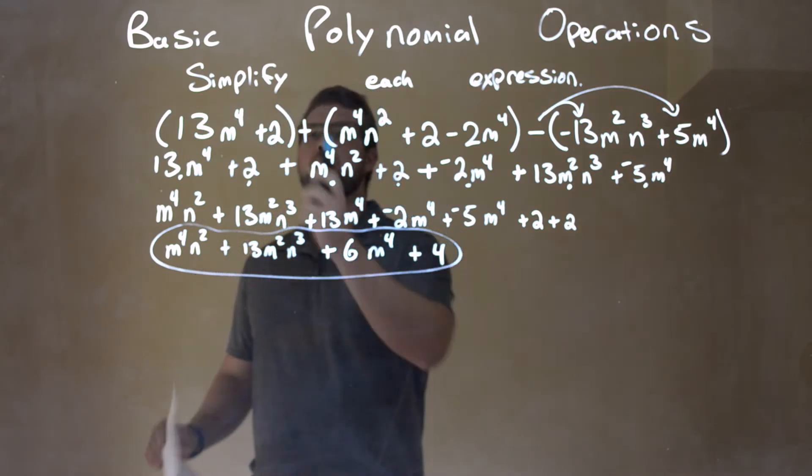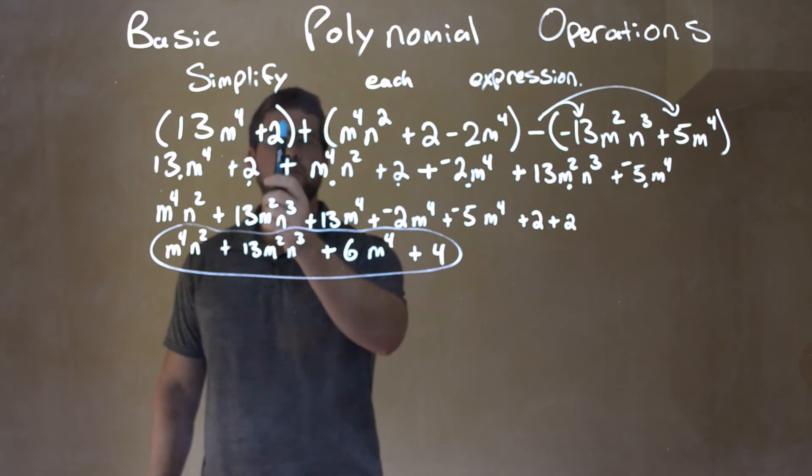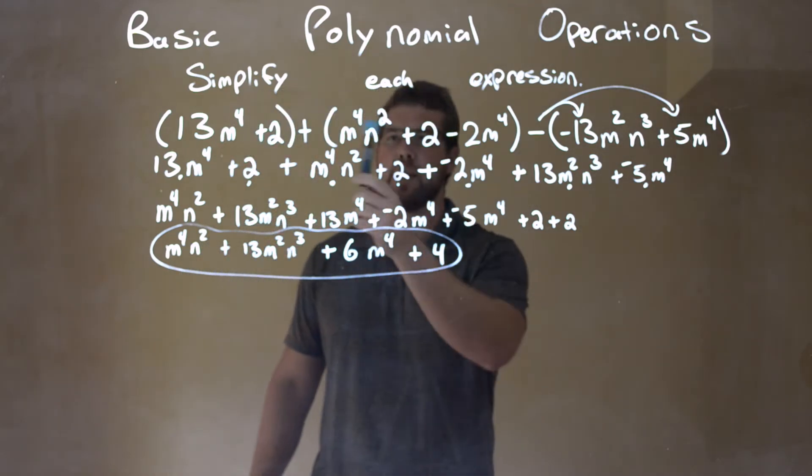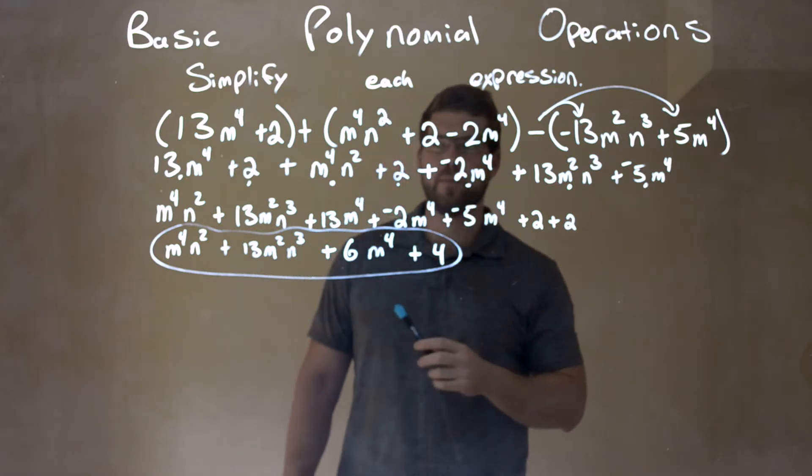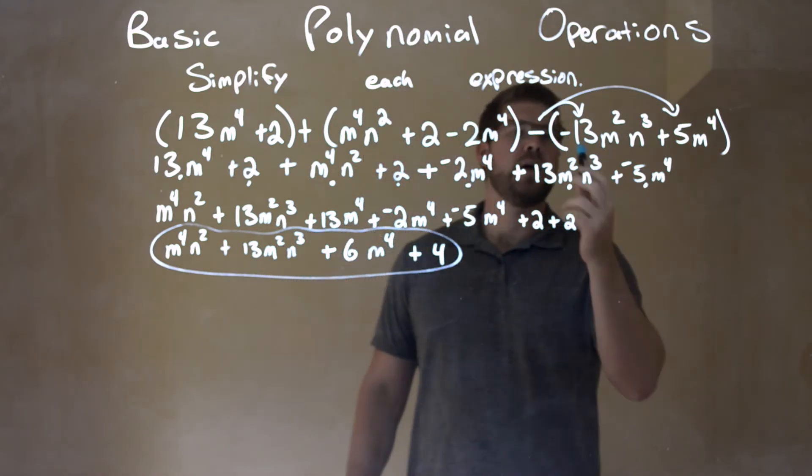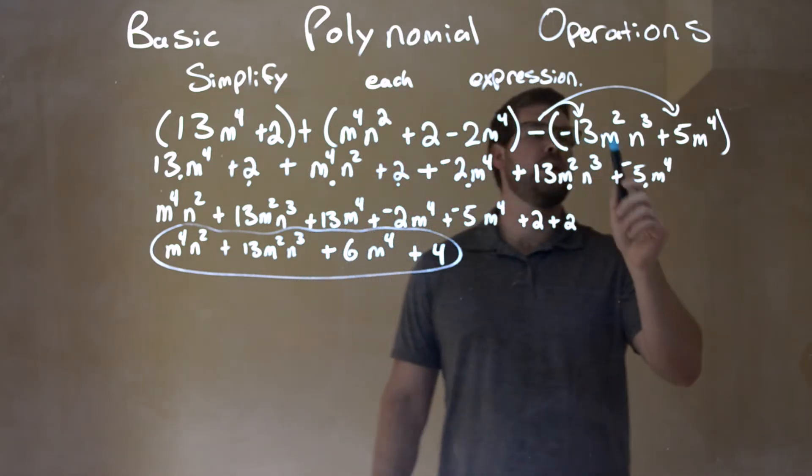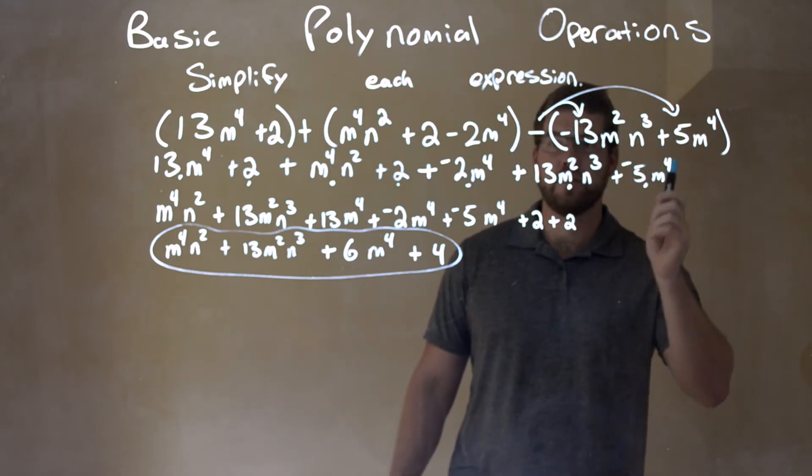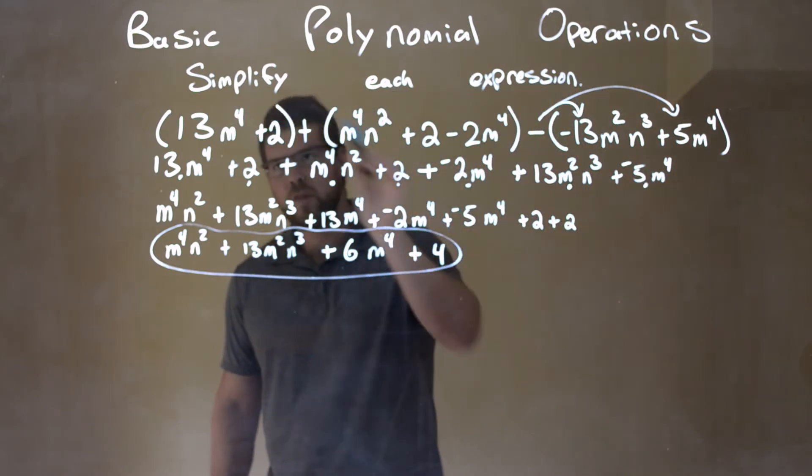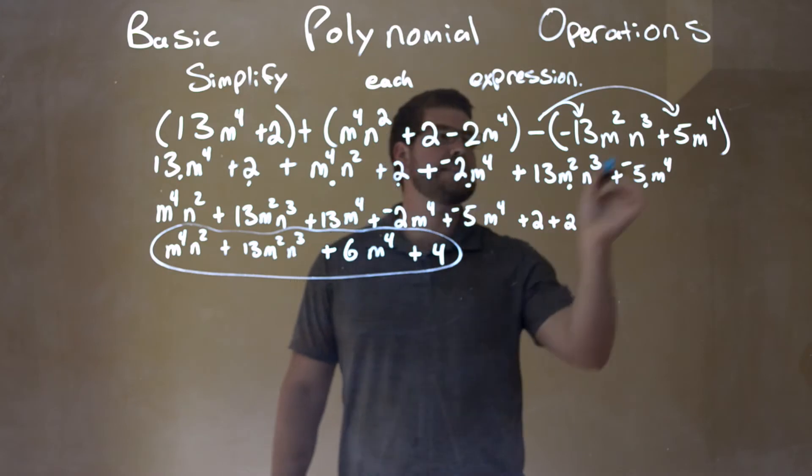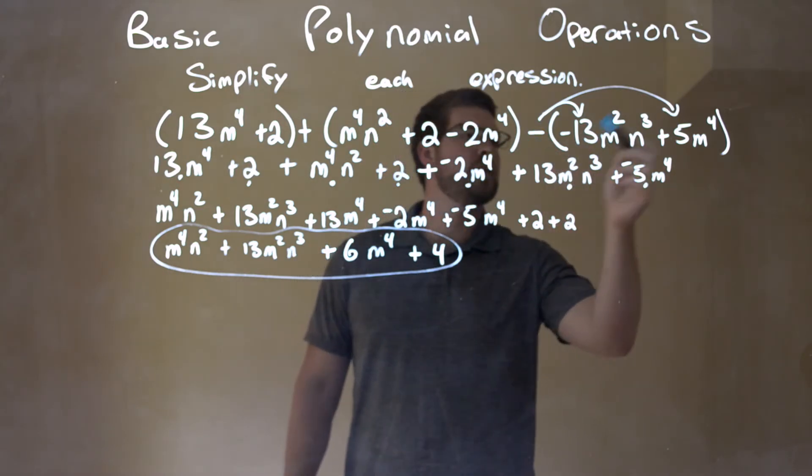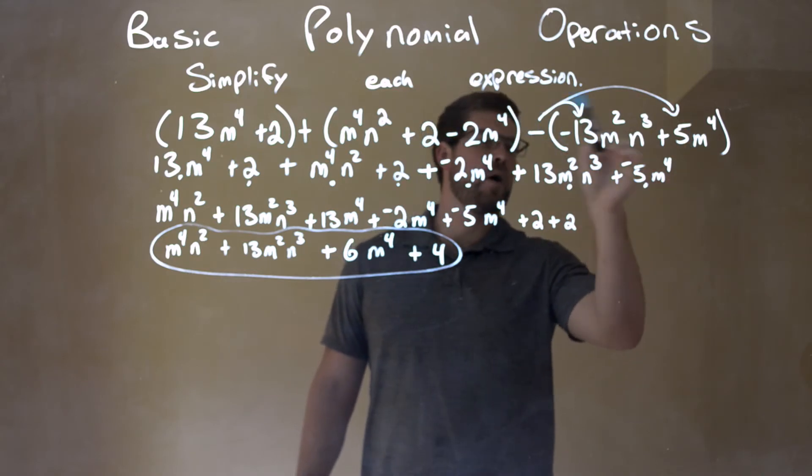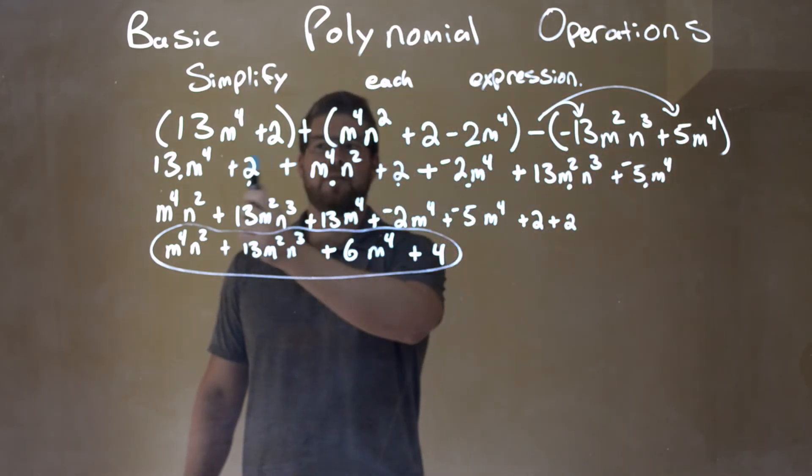Let's quick recap here. We're given our problem: 13m to the fourth plus 2 in one parenthesis, plus m to the fourth n squared plus 2 minus 2m to the fourth in one parenthesis, and subtract the last parenthesis of negative 13m squared n to the third plus 5m to the fourth power. Within each parenthesis, I quickly looked to see if I could simplify. Could I? No like terms within it.